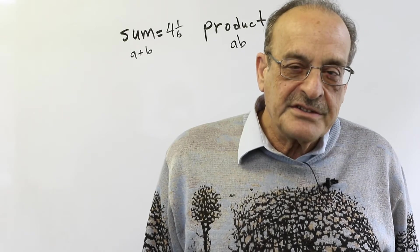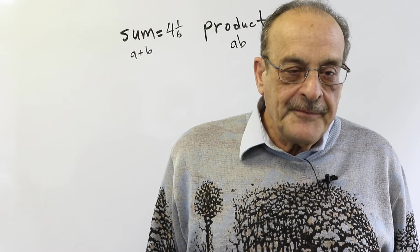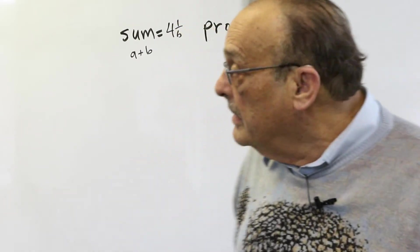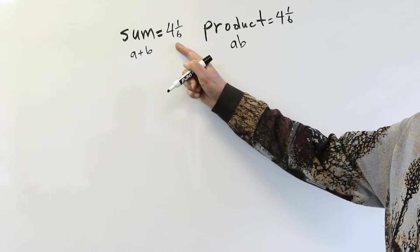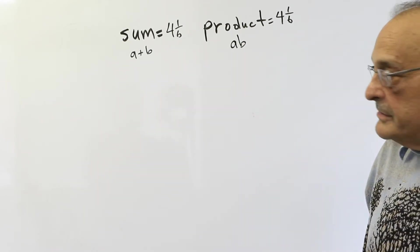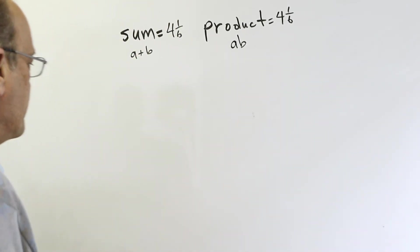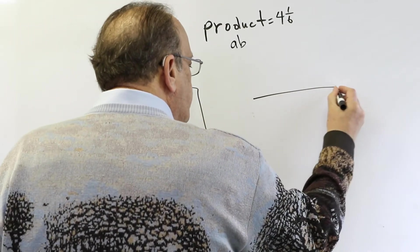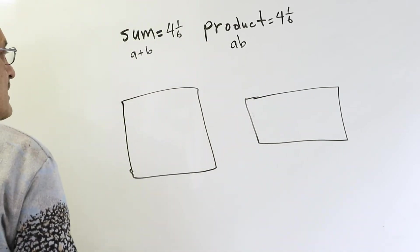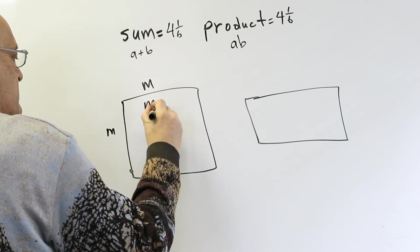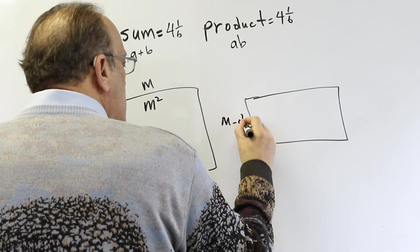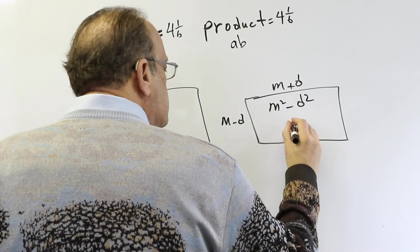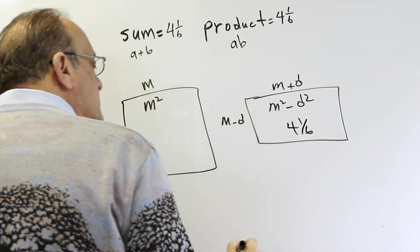Now we're going to do a similar problem with fractions to help a student review pre-algebra before getting into algebra. We're trying to find two numbers a and b whose sum is 4 and 1/6 and whose product is also 4 and 1/6. We use the same technique: a square labeled m by m with area m squared, and a rectangle labeled m minus d by m plus d with area m squared minus d squared.